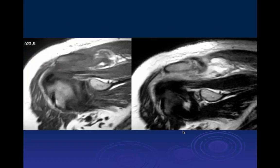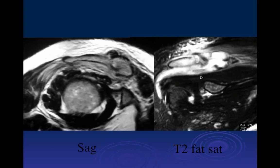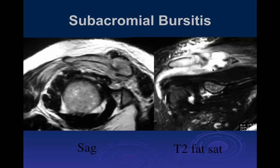Coronal T1 and T2 images at the level of the AC joint show extensive edema adjacent to the distal clavicle extending into the subacromial-subdeltoid bursa, with additional edema in the superior soft tissues and degenerative changes of the acromioclavicular joint. This is a classic subacromial response. Differential diagnosis includes infection, gout, rheumatoid arthritis, and psoriatic arthritis.